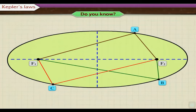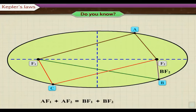Here, A, B and C are the points on the ellipse. Thus, AF1 plus AF2 is equal to BF1 plus BF2 is equal to CF1 plus CF2.